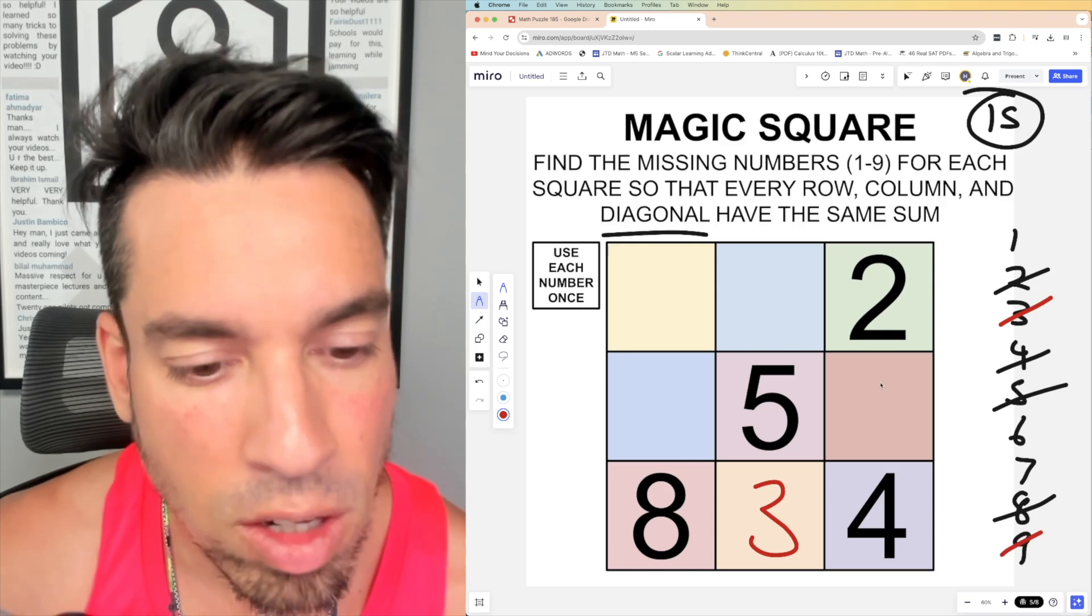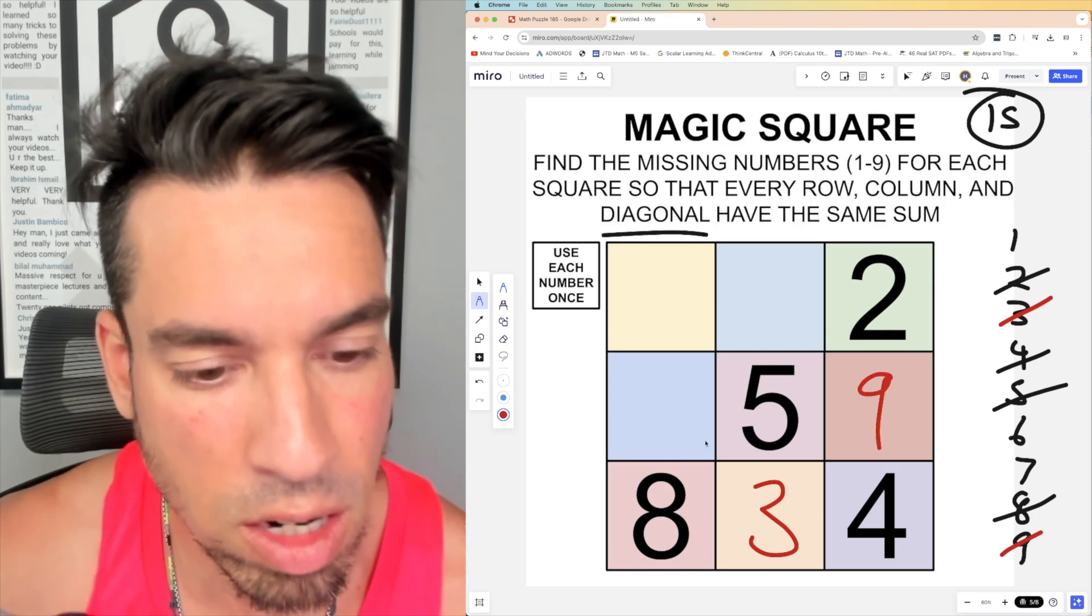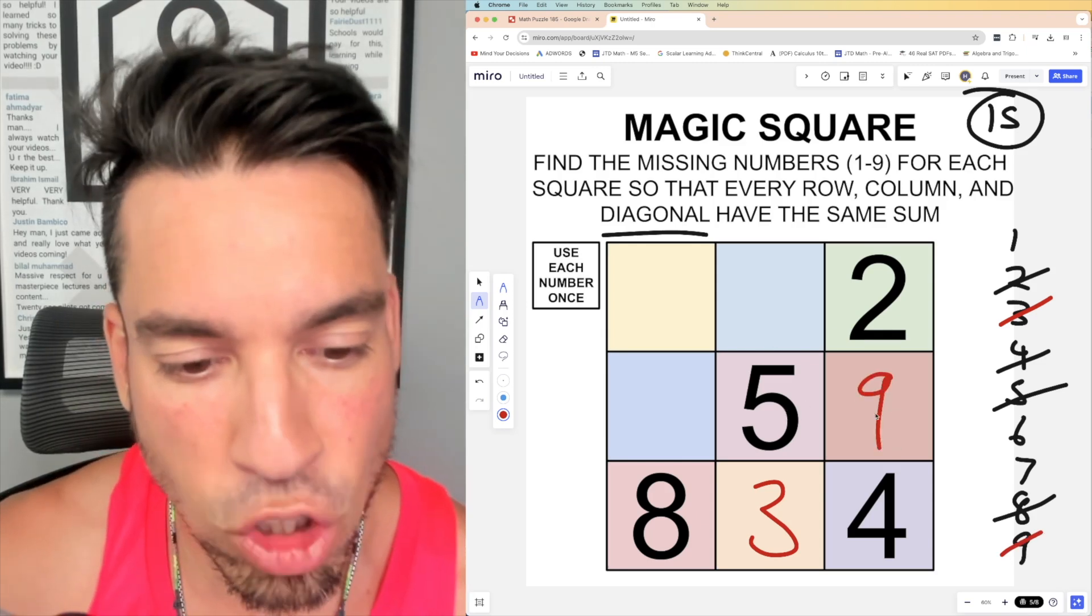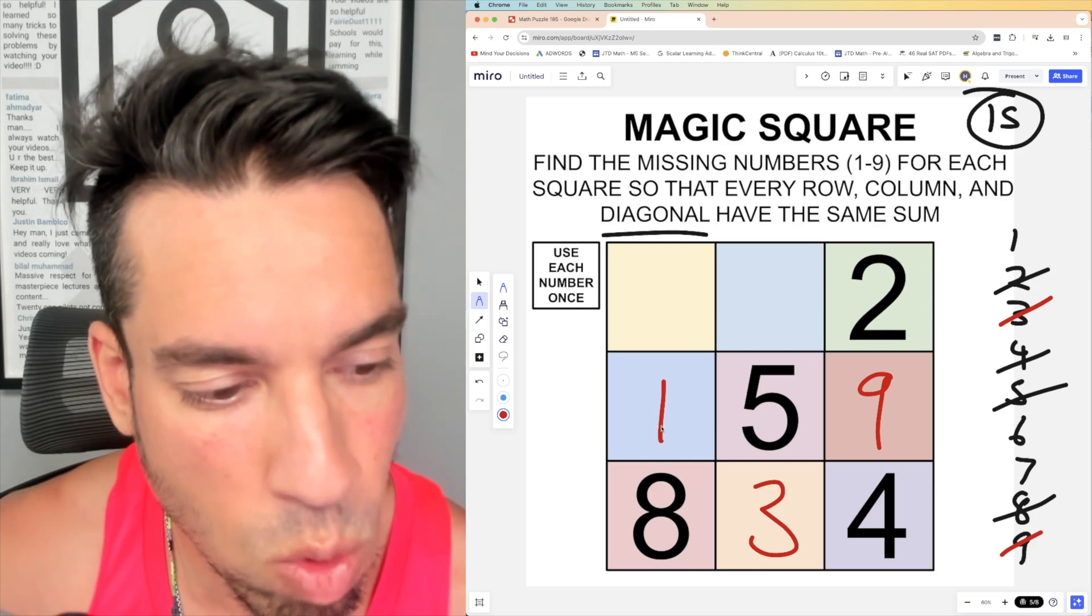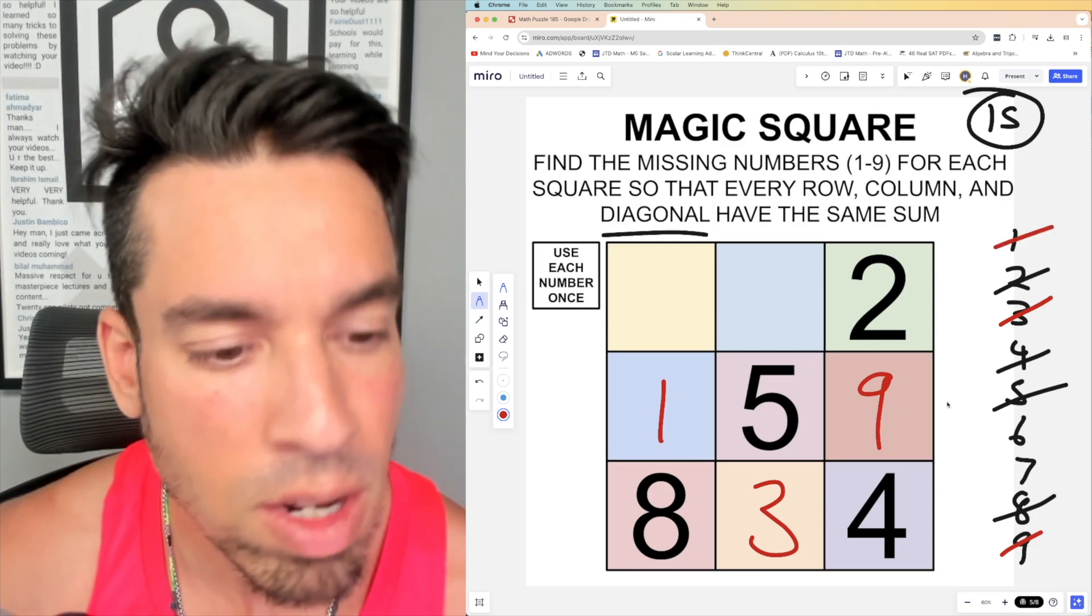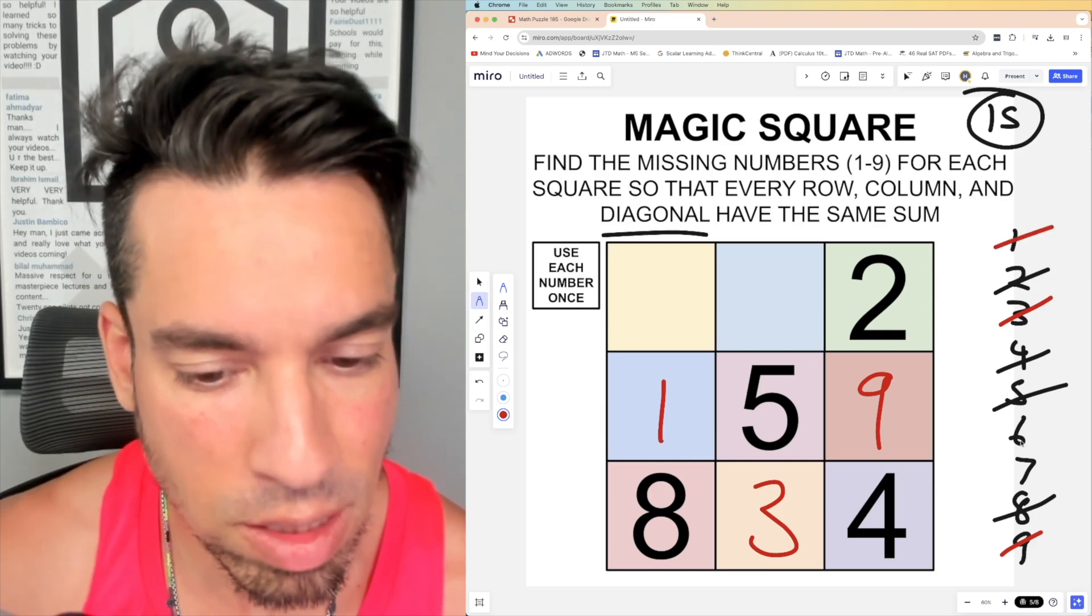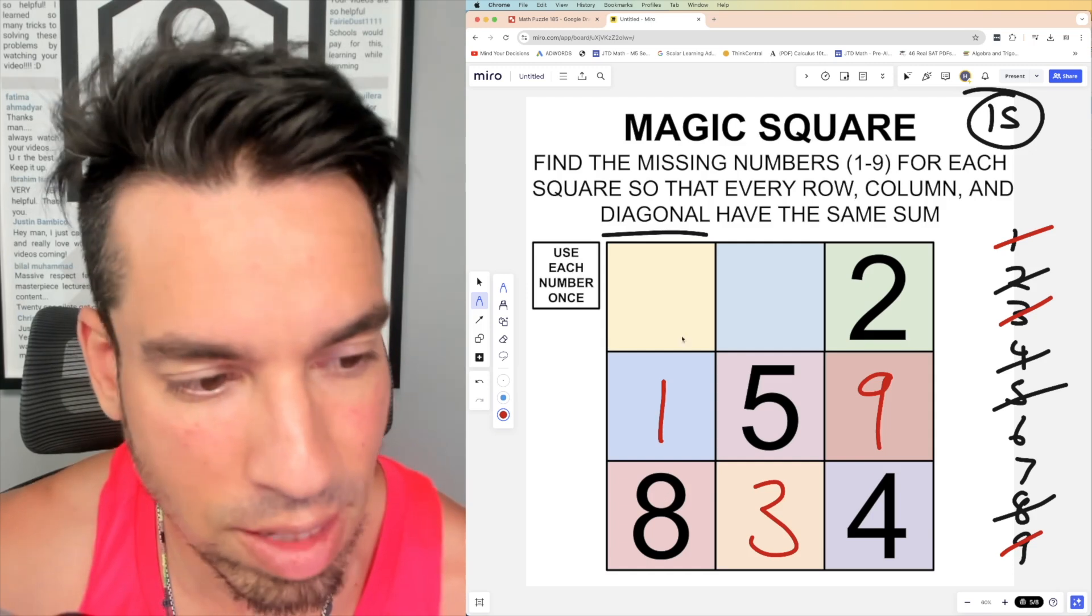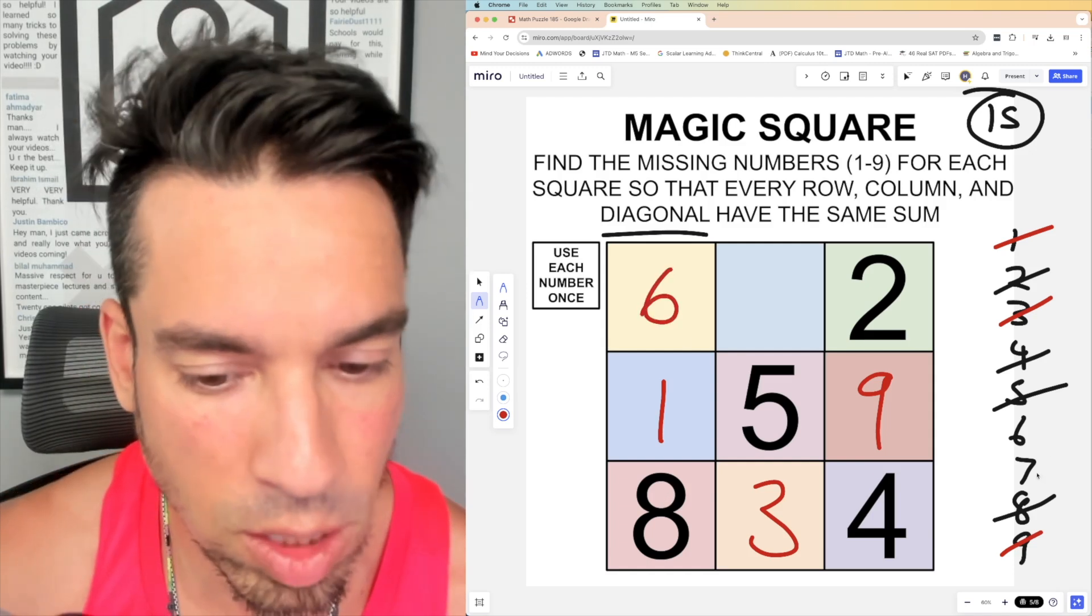Now I know I've got five and nine, which is 14. To get to 15 I need a one right there, so that's gone. And last but not least, we need to place the six and the seven. One plus eight is nine, plus six gives me 15, six is gone, and seven's got to go in here.